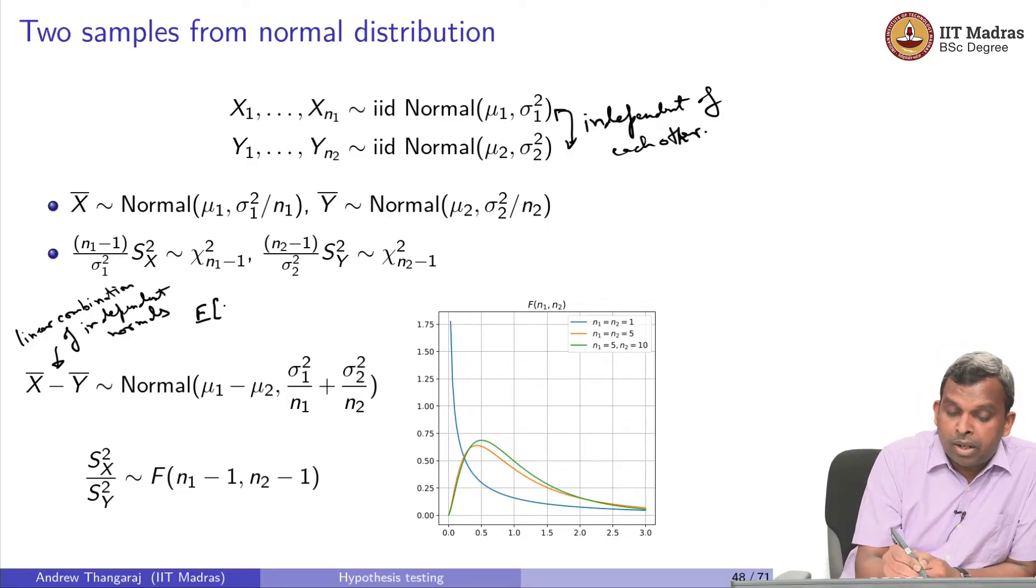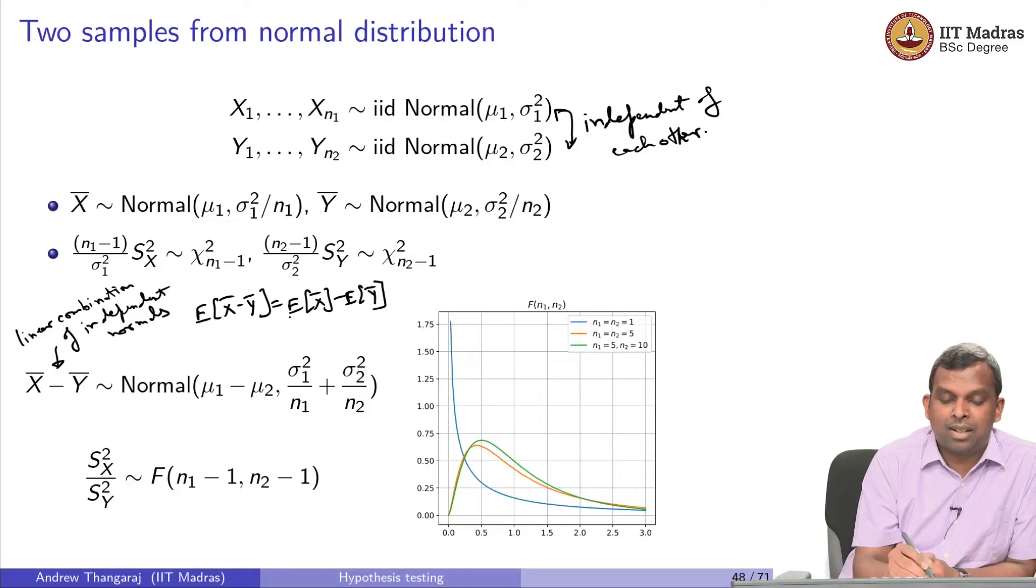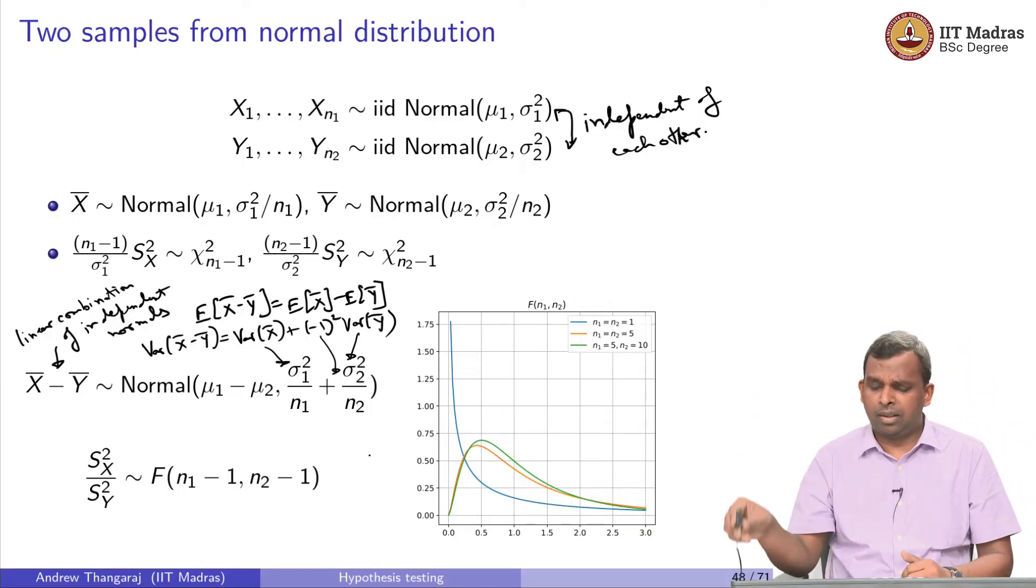This is quite an easy thing to derive in some sense, but it is also good to remember this. Let me maybe write it down. Expected value of X̄ minus Ȳ is expected value of X̄ minus expected value of Ȳ. This is easy enough to see linearity of expectation. What is variance of X̄ minus Ȳ? These two are independent. So it is variance of X̄ plus minus 1 squared. It is like A times X̄ plus B times Ȳ, the variance is A² times variance of X̄ plus B² times the variance of Ȳ.